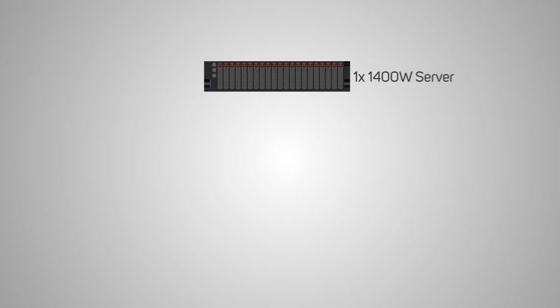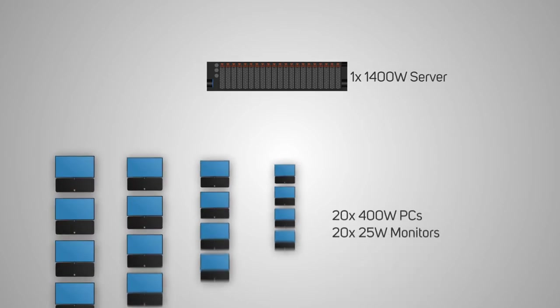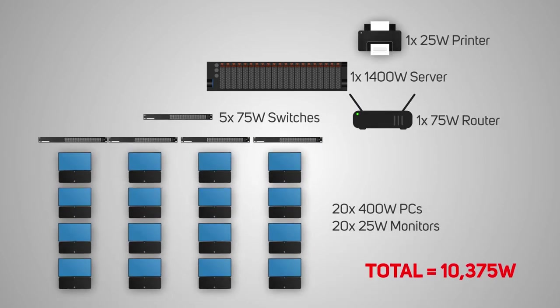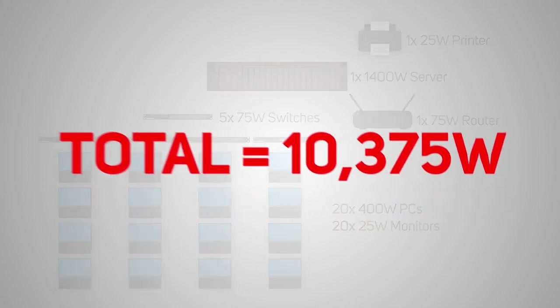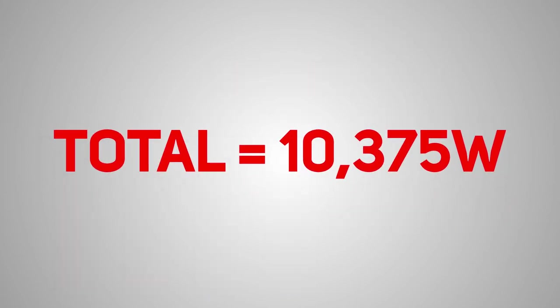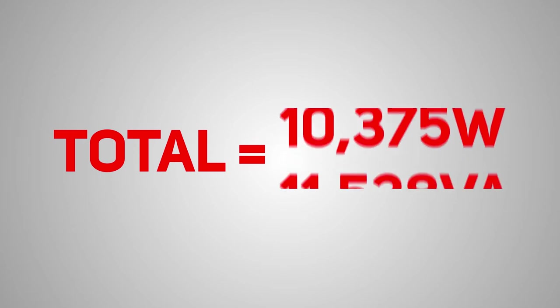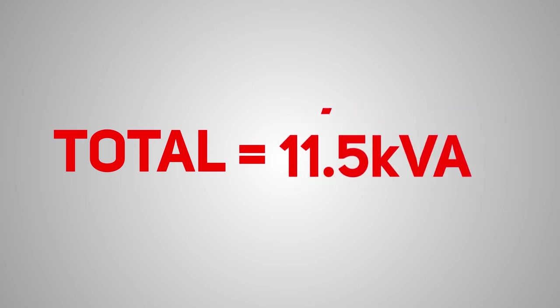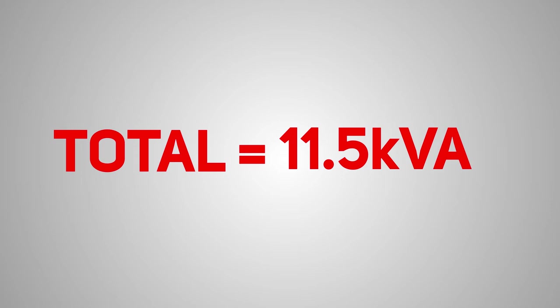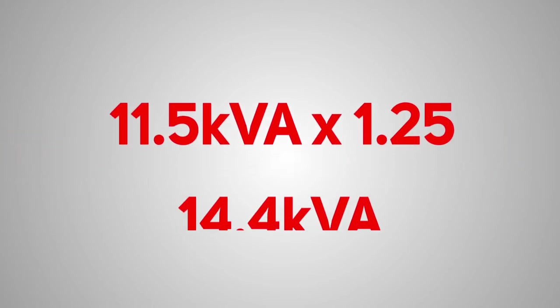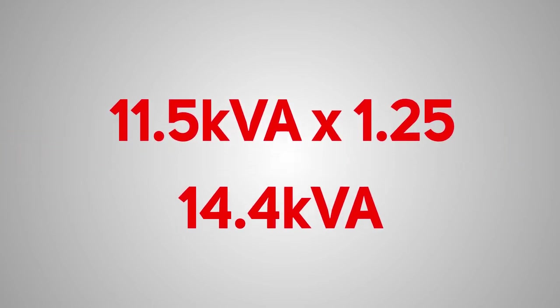Here's an example for a typical office, where a server may run at 1,400 watts, PCs at 400, monitors and printers at 25, and switches and routers at 75 watts each. You'd add all these wattages together and then convert the total figure to VA. The 10,375 watts becomes 11,528 volt amps, or 11.5 kVA. Multiplying by 1.25 allows for expansion and growth of the business, giving us a 14.4 kVA figure.